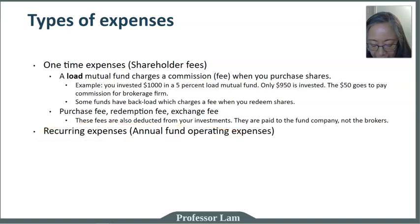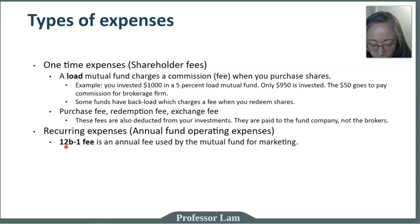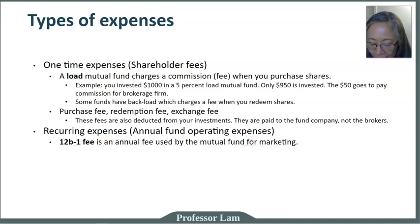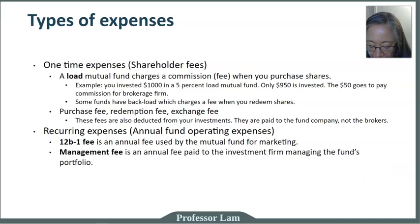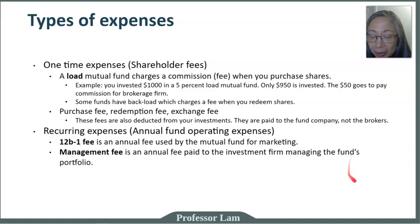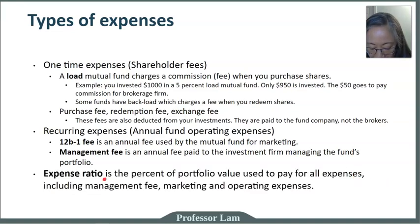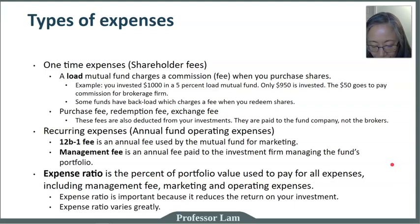Another important expense is recurring expenses — these will be deducted as long as you own the fund. One very common one is called a 12b-1 fee. This refers to the legislation that allowed them to charge this fee, and it's technically used only for marketing purposes. Management fee is paid to the investment firm. Some funds have 12b-1 fees and some don't, but all funds will have a management fee, and they vary greatly — some are very low and some can be quite high. Expense ratio is a statistic provided by the mutual fund showing the percentage of the fund's value used to fund expenses, and it reduces the return you get on your investment.